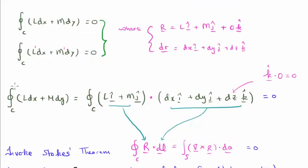Let's first look at the integral, the closed line integral of l dx plus m dy. This can easily be rewritten as a dot product of l i hat plus m j hat with dr. And that's because, of course, k hat dot zero is equal to zero. So you could easily have, you might have n k hat here if you wanted, where n is equal to zero.